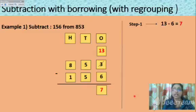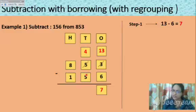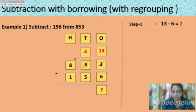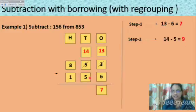Now let us move to the tens place. Just now, one number was given from the tens place to the ones place, so how much is left in the tens place? From 5, one number went away, so 4 is left. Can you subtract 5 from 4? No — 4 is smaller. So we need to borrow from the hundreds place. After borrowing, you get 14 in the tens place.